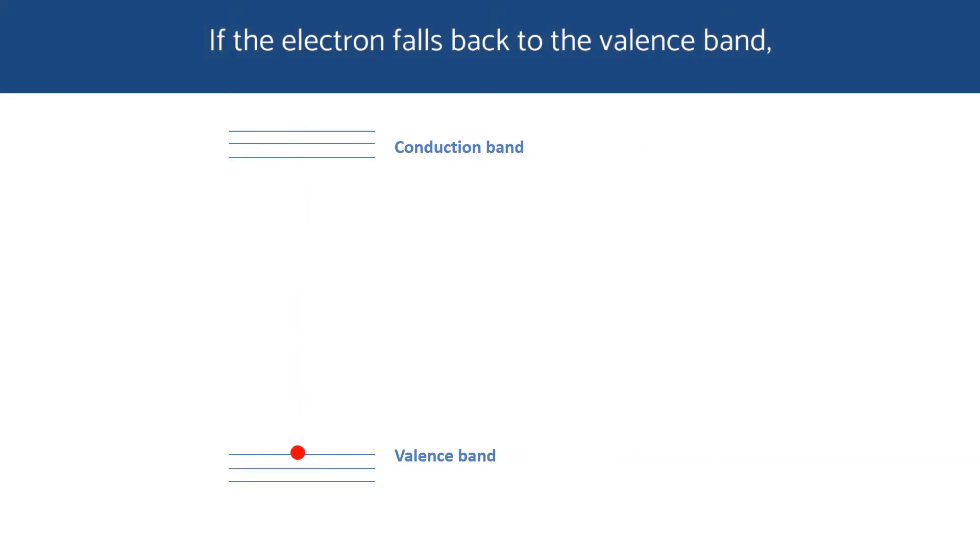Now, if the electron falls back to the valence band, it will emit a photon as before. Therefore, this is still spontaneous emission.